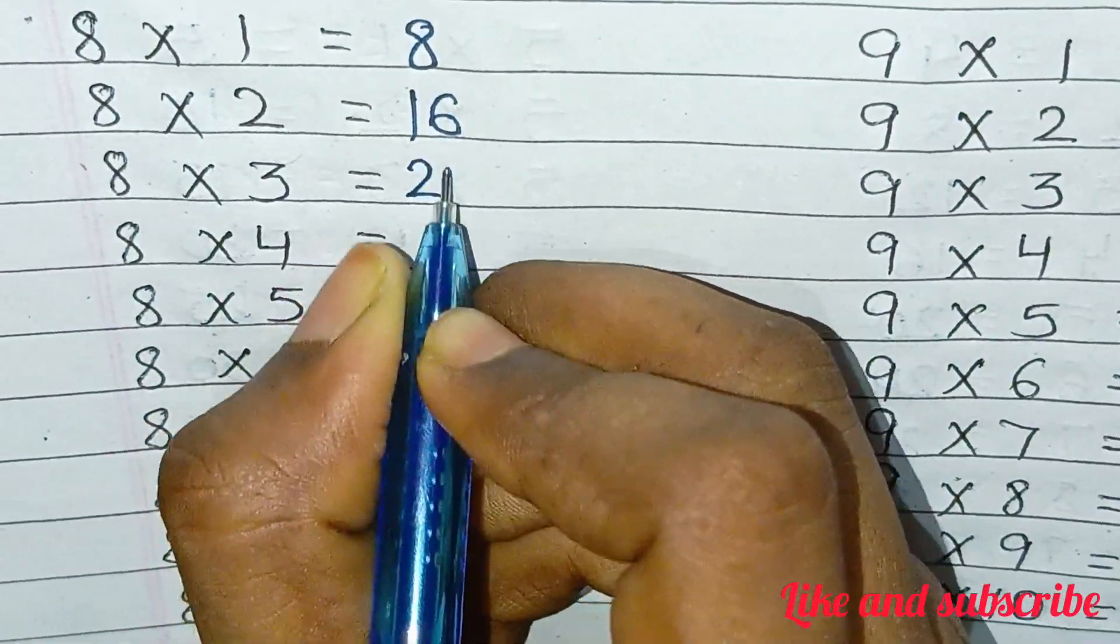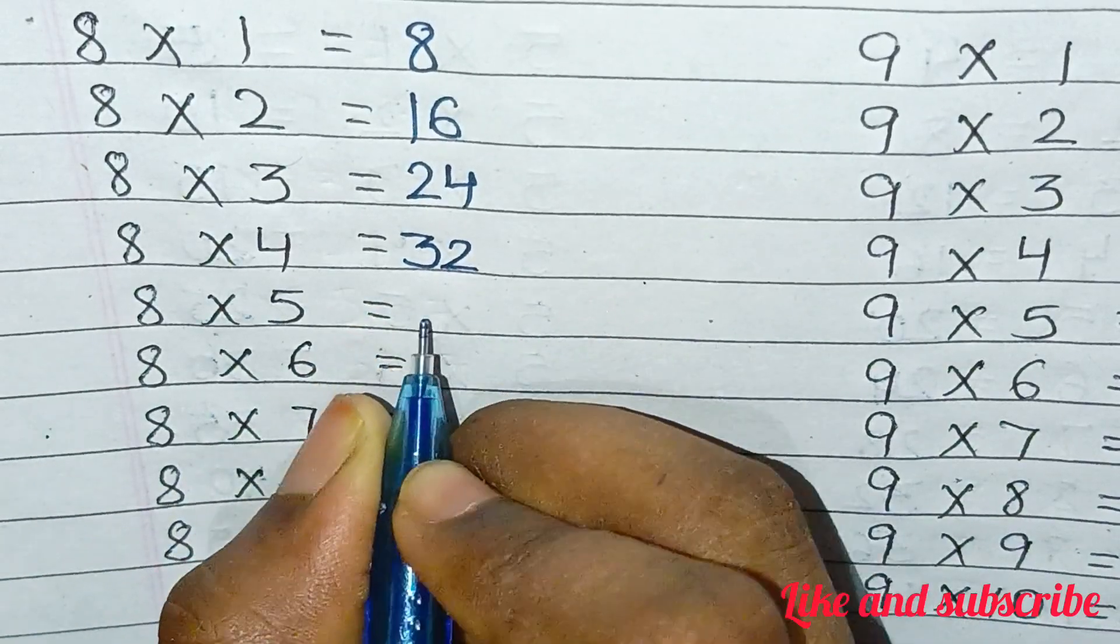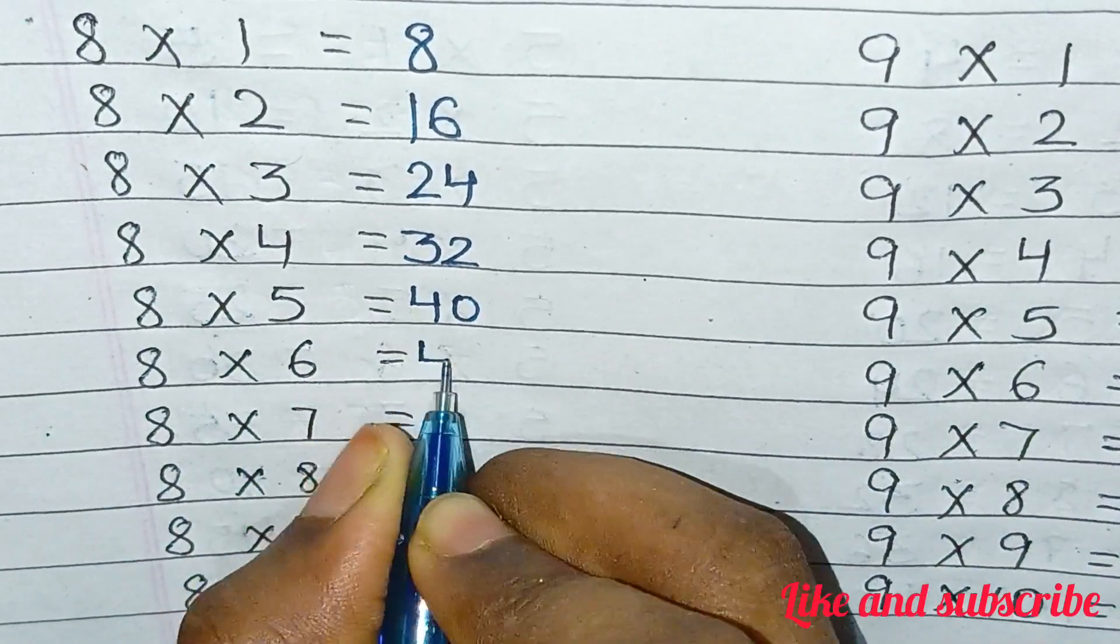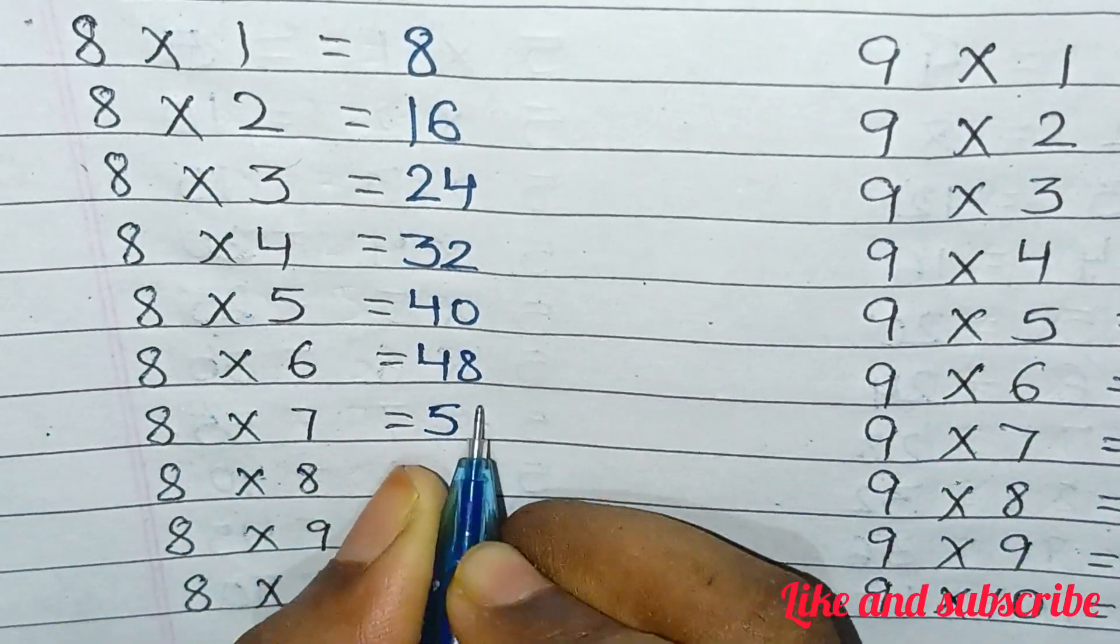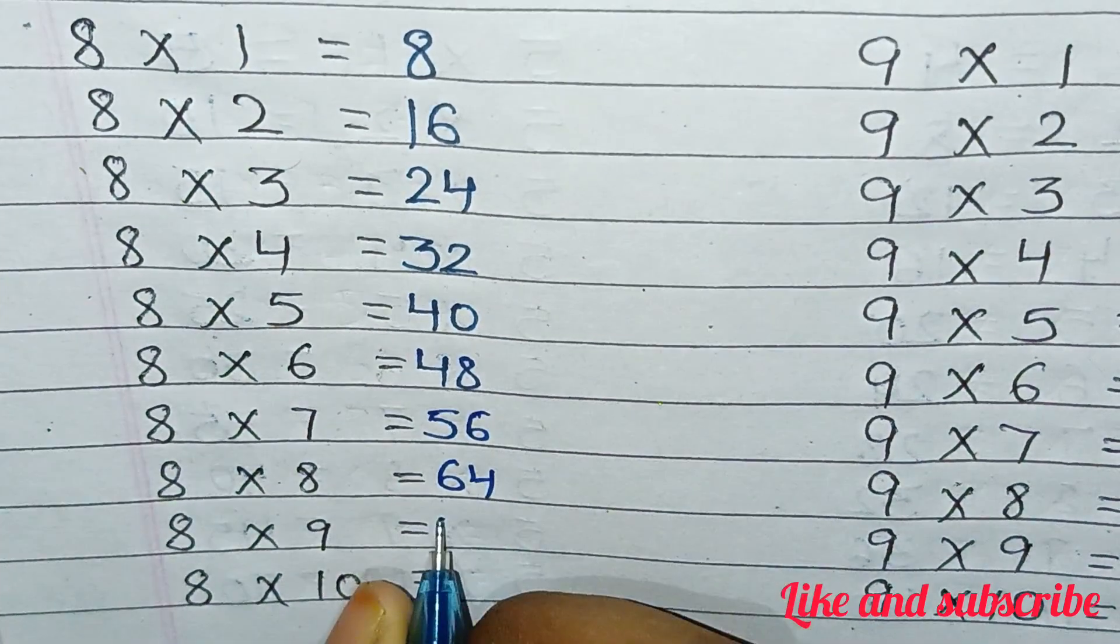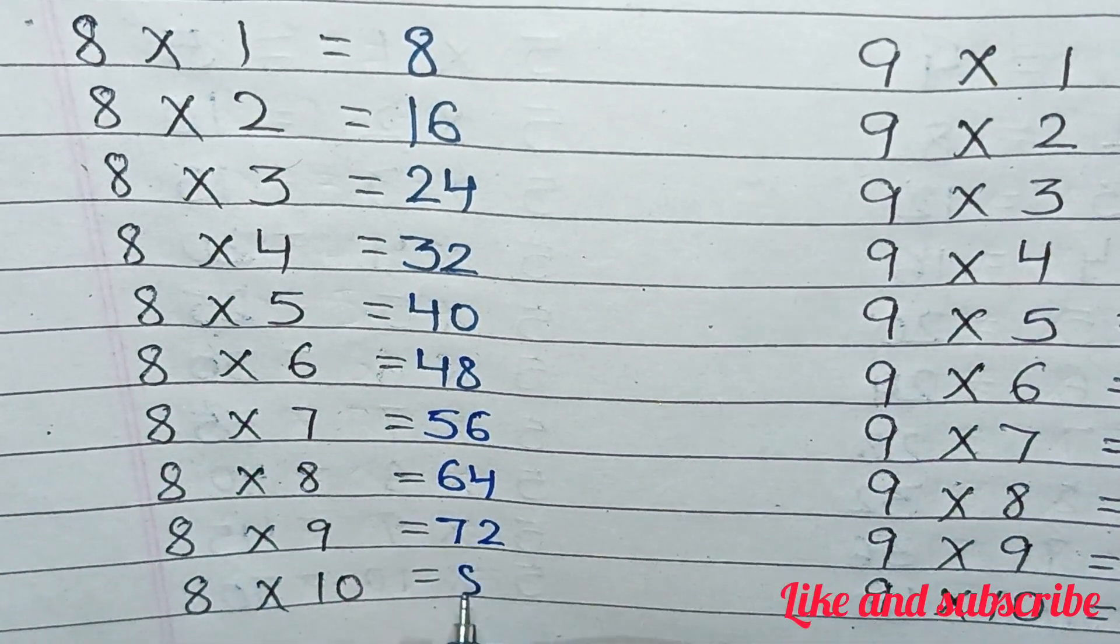8×1=8, 8×2=16, 8×3=24, 8×4=32, 8×5=40, 8×6=48, 8×7=56, 8×8=64, 8×9=72, 8×10=80.